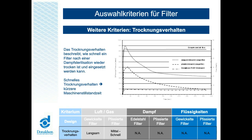Entschuldigung, wir hatten hier einige Probleme mit unserer Telefonleitung. Das Trocknungsverhalten eines Gasfilters beschreibt den Prozess, wie lange es dauert und welche Differenzdrücke auftreten, wenn ein Gasfilter nach einer erfolgten Dampfsterilisation wieder komplett trocken ist und seine Arbeit wieder aufnehmen kann. Auf dem Chart sieht man die Unterschiede zwischen gewickelten Filterelementen und plissierten Filterelementen. Gewickelte Filterelemente werden im Allgemeinen sehr langsam trocken, während plissierte Filterelemente ein sehr viel schnelleres Trocknungsverhalten und somit eine kürzere Maschinenstillstandszeit zeigen.